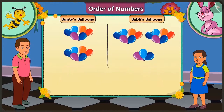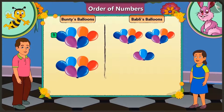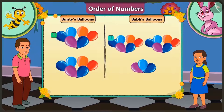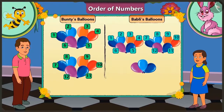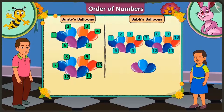Now tell me, of Bunty and Bubbly, who has more balloons? Bunty has 12 balloons and Bubbly has 15 balloons. So Bubbly has more balloons than Bunty. 15 is a bigger number and 12 is a smaller number. Which number comes first in the order of counting — 12 or 15? While counting, 12 comes first, then 13, 14, 15.